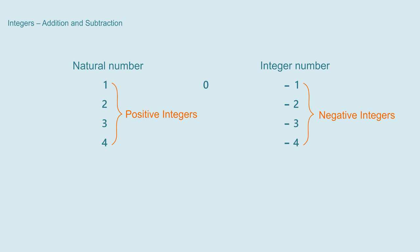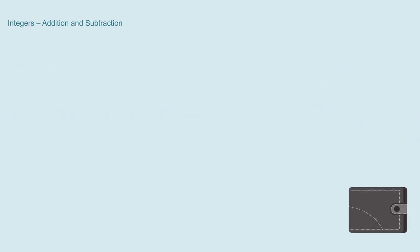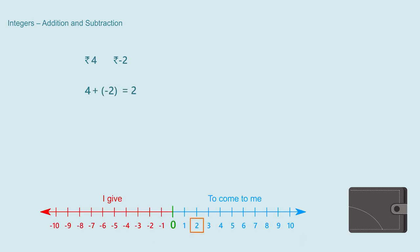Now let us do this for integers. First of all, understand that if the integer numbers which we have to add are natural numbers then their addition will give a natural number, that is an integer. But if one is a positive integer and another is a negative integer, then what will happen? Let us take an example. Suppose I have 4 rupees and I have minus 2 rupees, that is I have to pay 2 rupees to someone. After giving 2 rupees out of 4 rupees I will have 2 rupees left. So we write this as 4 plus minus 2 equal to 2, which is an integer.